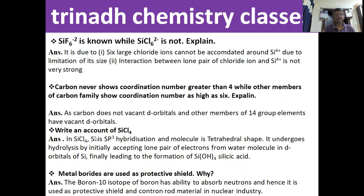The next question is to write an account of SiCl4. In SiCl4, silicon is in sp3 hybridization and the molecule is in tetrahedral shape. It undergoes hydrolysis by initially accepting the lone pair of electrons from the water molecule into d-orbitals of silicon, finally leading to the formation of silicic acid Si(OH)4.